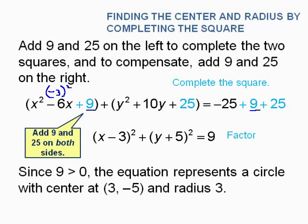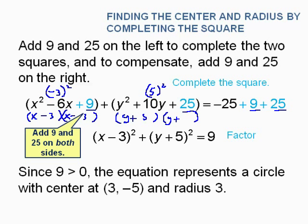For the second group, take half of 10, which is 5, square it to get 25 — that's the second blank. Factor the expressions: the first gives x minus 3 quantity squared, the second gives y plus 5 quantity squared. The center, taking opposite signs, is 3, negative 5, and the radius is the square root of 9, which is 3.